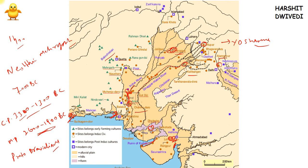Banawali is an important site in Hisar, Haryana, where high-quality barley storage sites have been found. Alamgirpur, in Uttar Pradesh, is the easternmost extent of Indus Valley civilization, and fossils of plants, bones of animals, pottery, and copper and bronze tools have been found there. Surkotada in Gujarat is famous for horse bones found there.